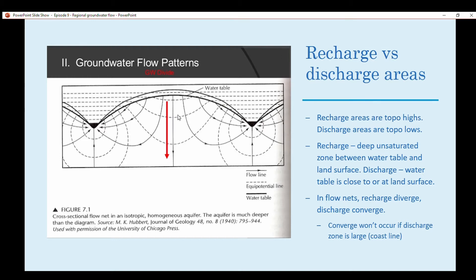For recharge, they diverge. Think of it like this at the top - that's diverging, and then discharge into the stream valley is converging, those flow net arrows. Convergence won't occur if the discharge zone is large, such as at a coastline.